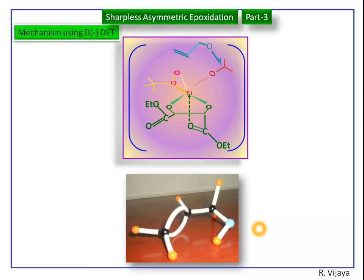This is the allylic alcohol. Here the isopropoxide group is replaced by the allylic alcohol. We get a new complex. The bonds are adjusted.